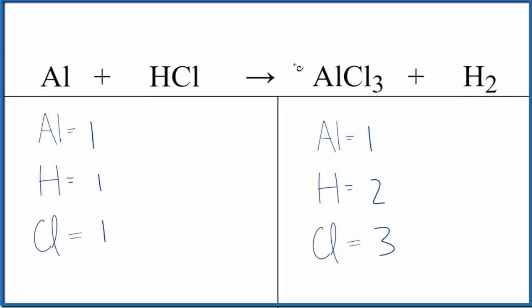So if I put a two in front of the aluminum chloride, one times two, that's two, but the three times the two, that'll give me six.